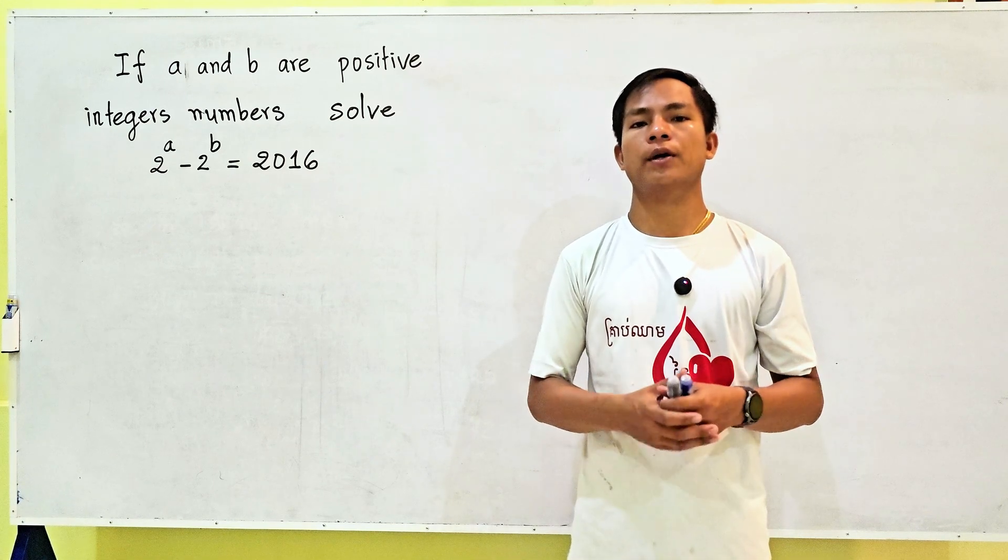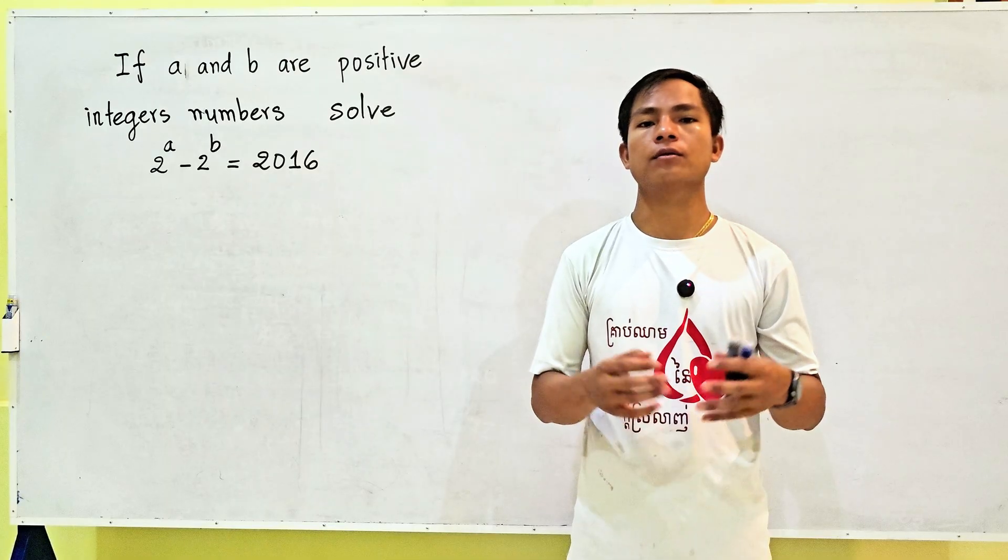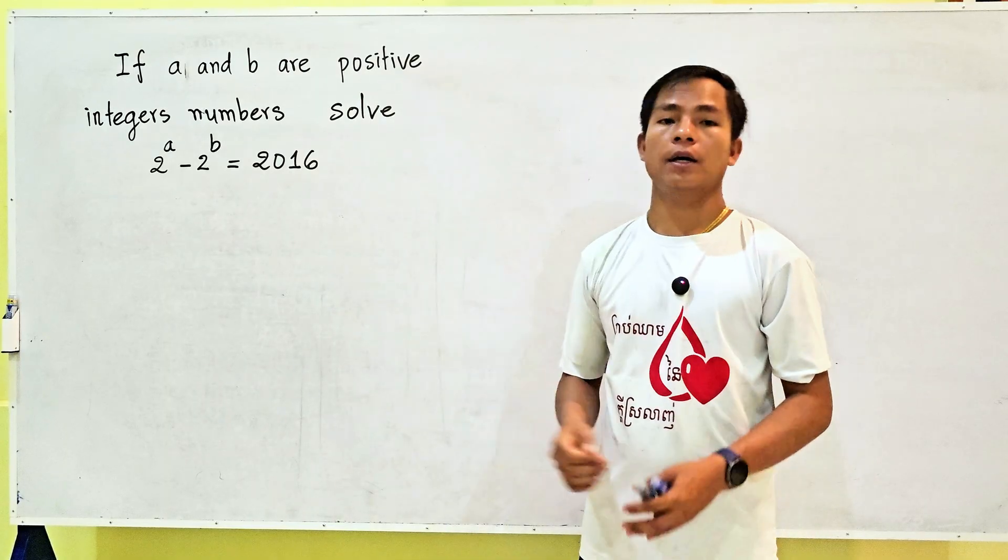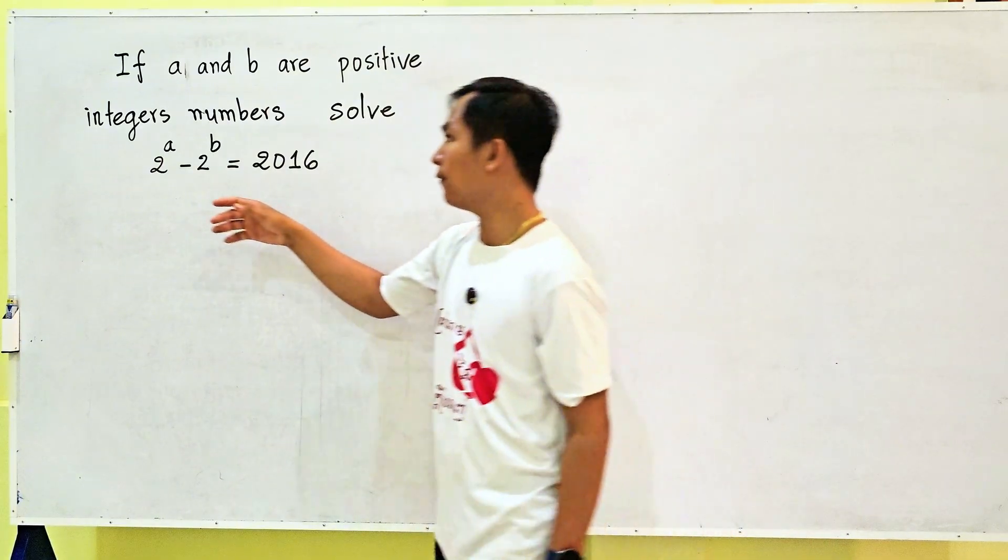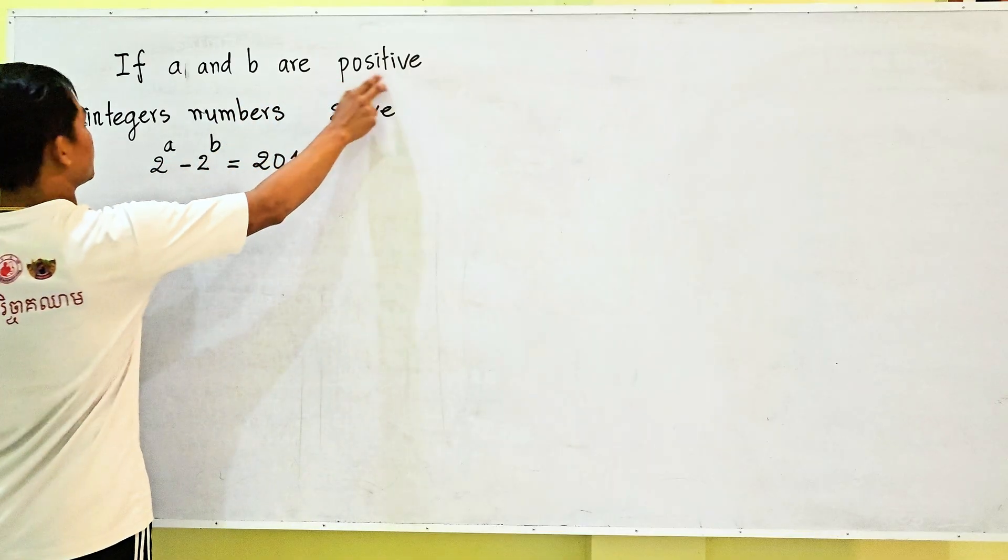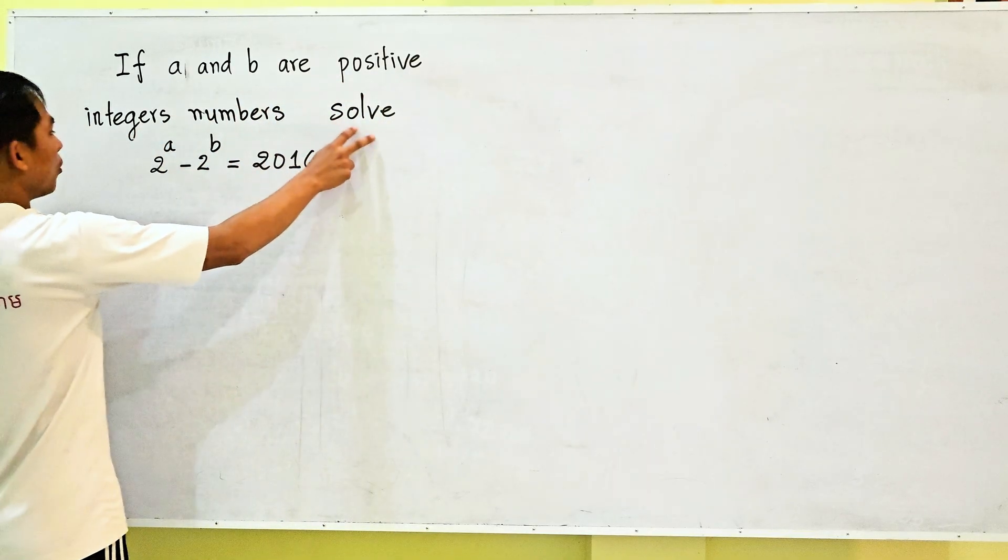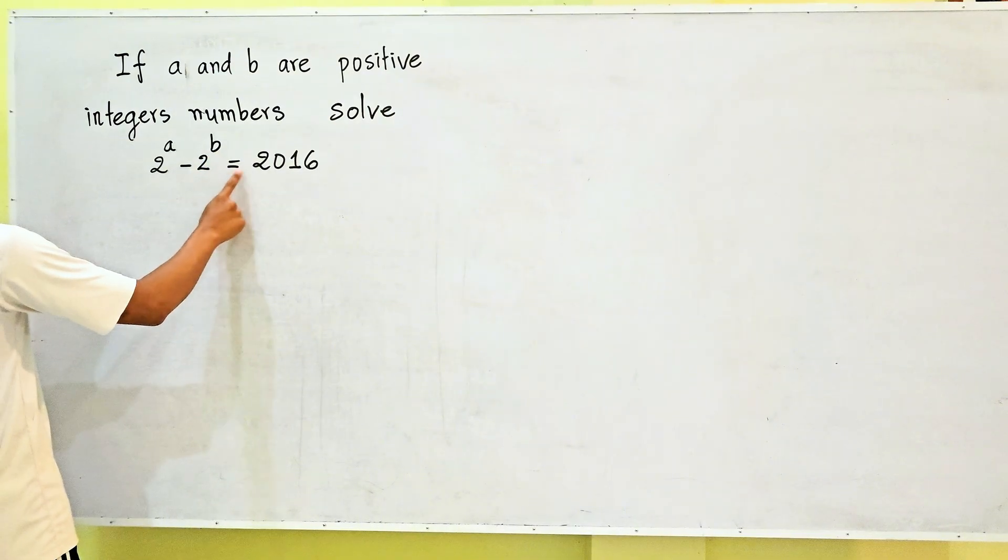Hello everyone, welcome to my YouTube channel. In this video, we are showing you how to solve this exponential equation. If a and b are positive integer numbers, solve 2^a - 2^b = 2016.